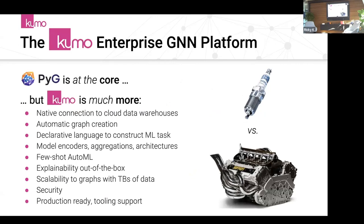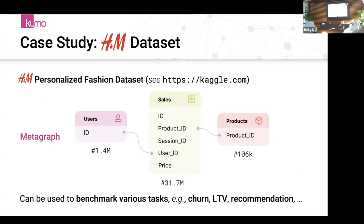The way Kumo relates to PyG: think of PyG as a spark plug—to drive somewhere, you need a spark plug, but Kumo provides an entire engine. If you'd like to build an engine yourself, you can, but it takes time and resources. I'll present what we're doing through a case study using a dataset from H&M, a big European clothing retailer from Kaggle. It's a simple schema: users, sales, and products.